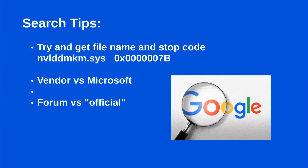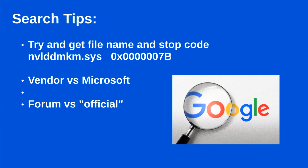The main point, as I promised, regarding searching and diagnosing what went wrong and how to fix it, is — like we stressed in the previous episode — getting that file name if we can, and getting that stop code. Just an example here: the nvlddmkm.sys file seems to be the culprit, and we have a stop code, and we search on this information.